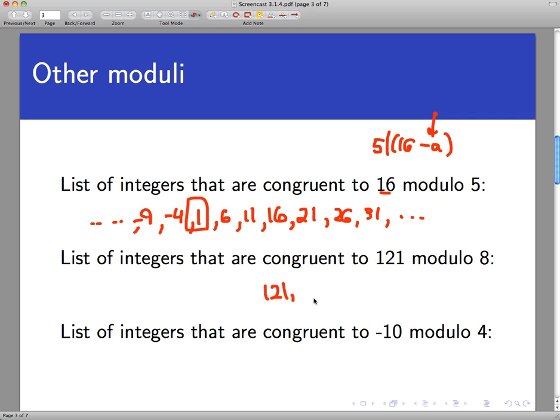We could push forward in this. You know, 129 would also be congruent to 121 because their difference is divisible by 8. Also 137 and so forth. But I want to go back to this idea of what's the smallest non-negative number in this list. There is no smallest number in this list because it continues off to the left forever.